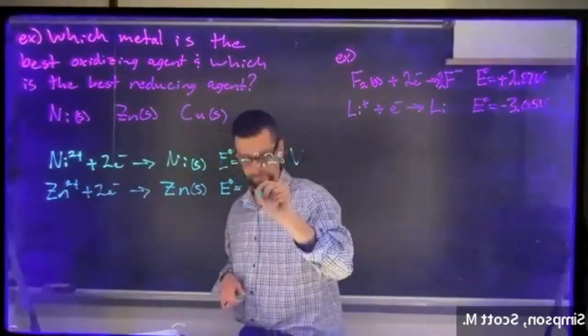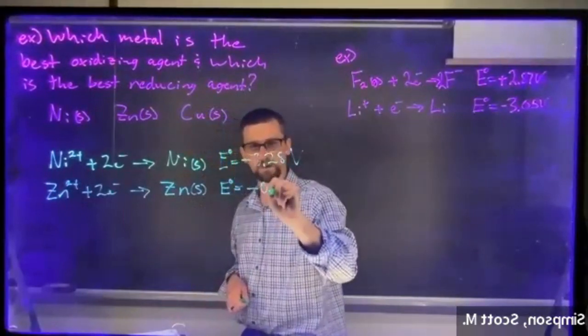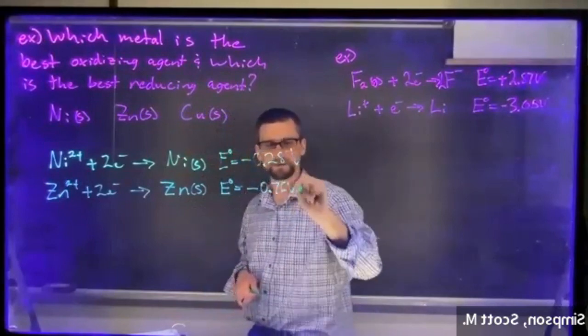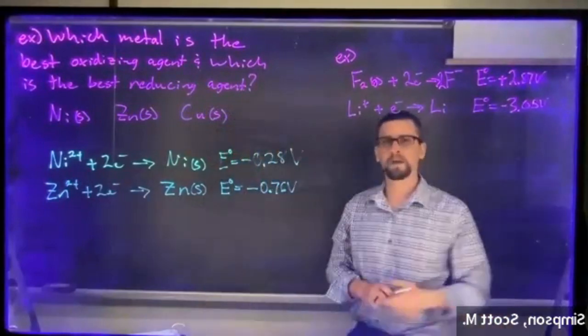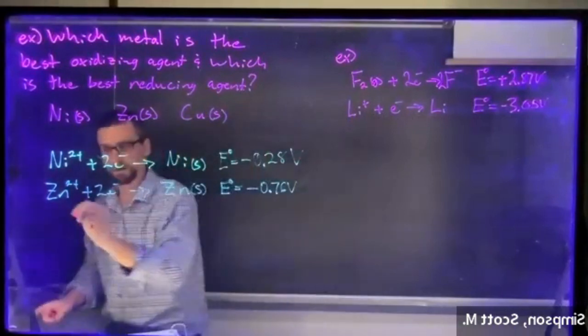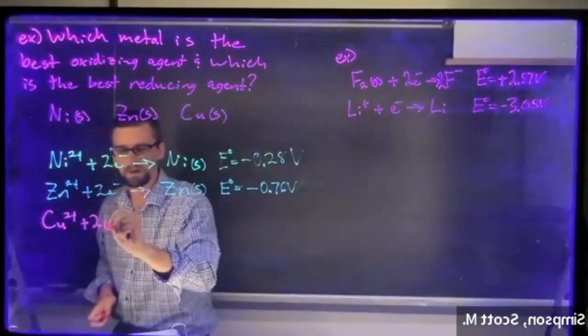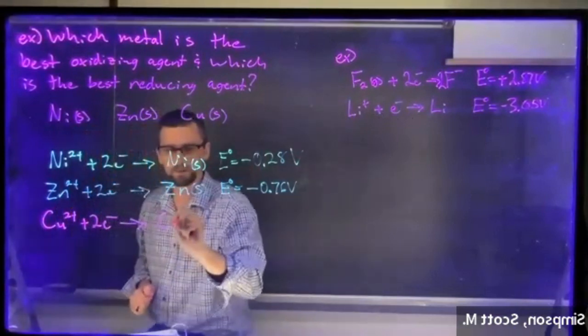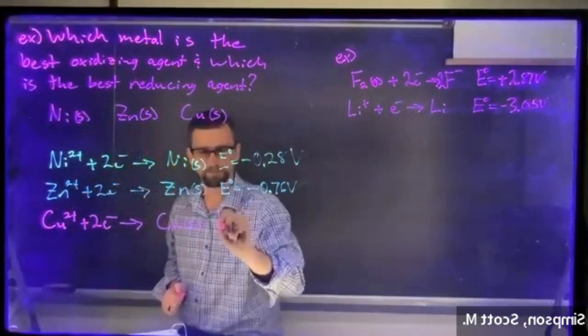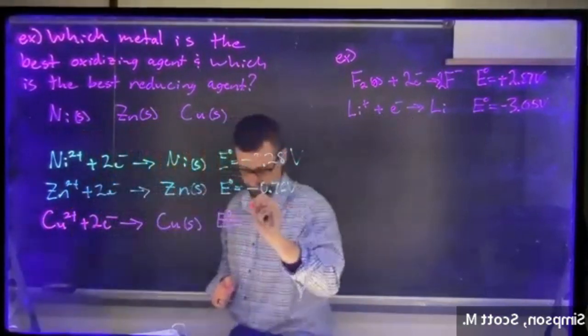Finally, we have copper 2+ plus two electrons gives copper solid. E° in this case is positive 0.34 volts.